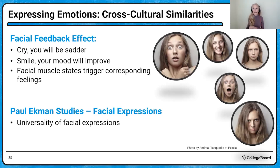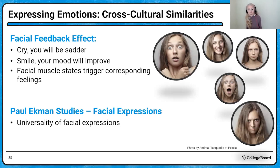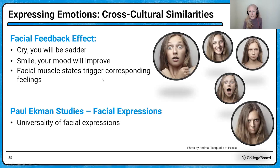Let's look at cross-cultural similarities in emotional expression. You may recall Paul Ekman's studies on facial expressions — we have six or seven universal facial expressions depending on your textbook. Expressing emotions is pretty similar across cultures: people smile when happy, cry or frown when sad, brow furrows when angry. And sometimes when we look at expression of emotions, it can actually cause us to more strongly feel that emotion — no matter what culture, if you cry it could make you feel even sadder. If you smile, your mood will improve because those facial muscle states trigger corresponding emotional feelings.